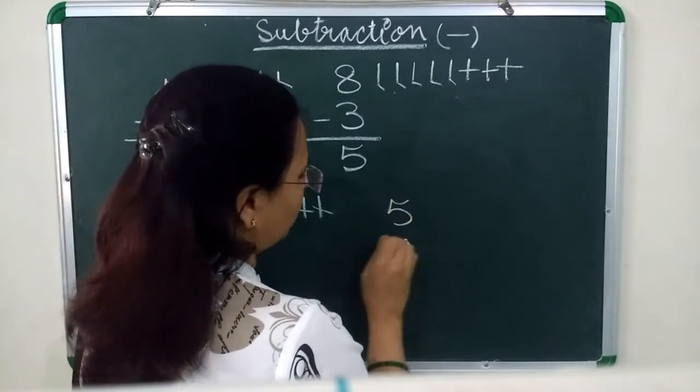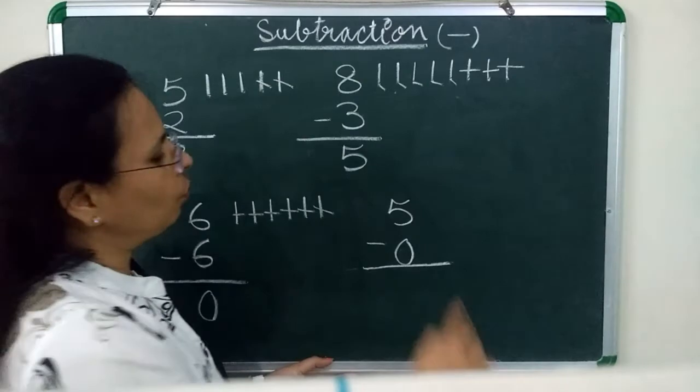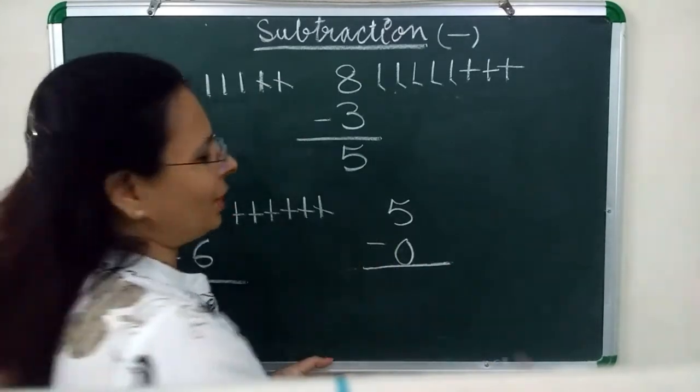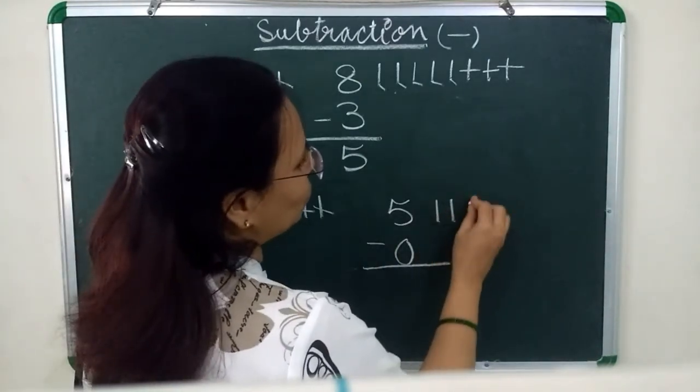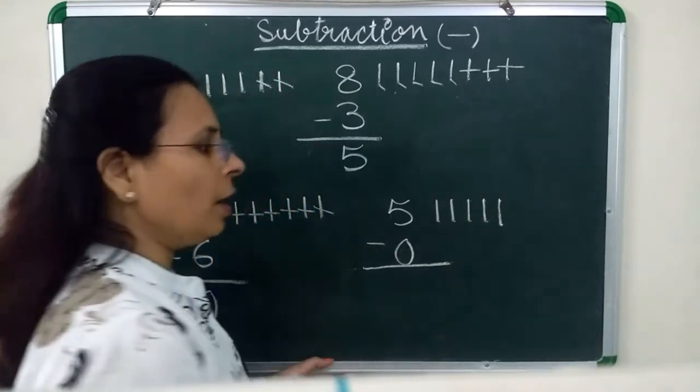5 minus 0. So, first, we will draw 5 pencils. 1, 2, 3, 4, 5.